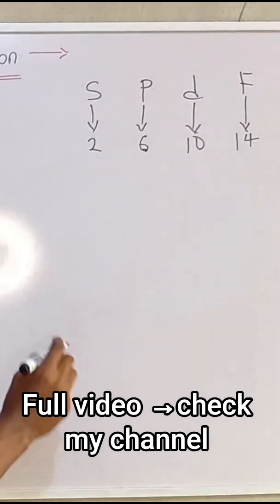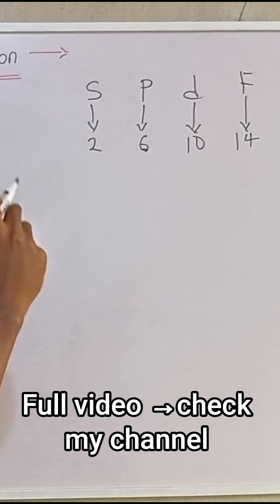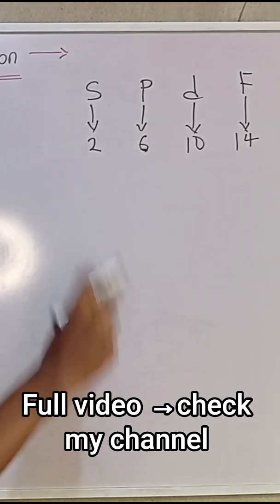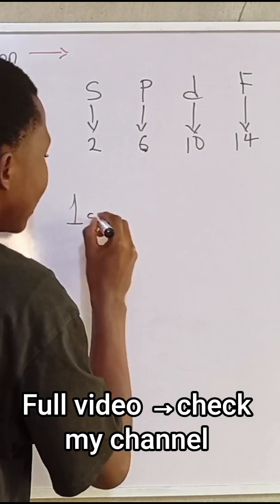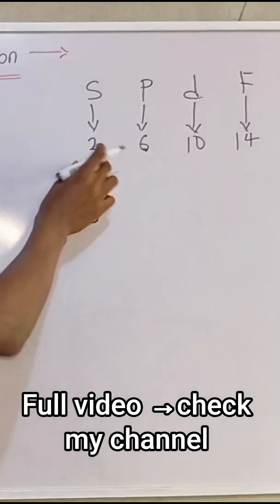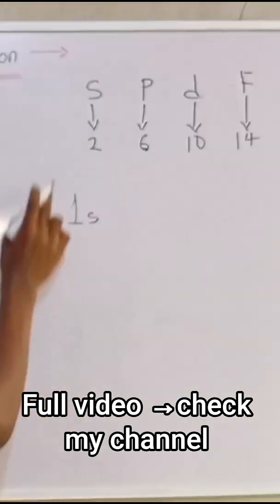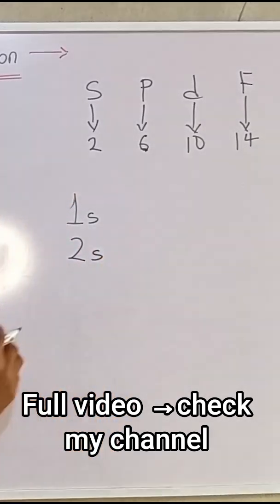Now for every atom, the first energy level has how many orbitals? Only one of it, which is S. So now we have 1s, and because it's only S, we know that it's only two electrons, right? Now this is the first energy level.